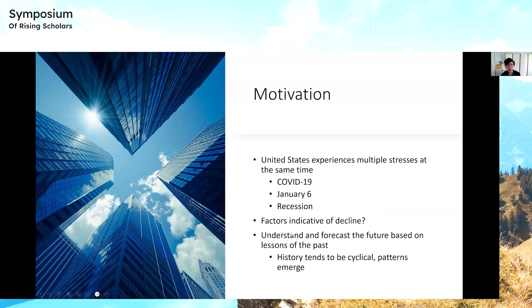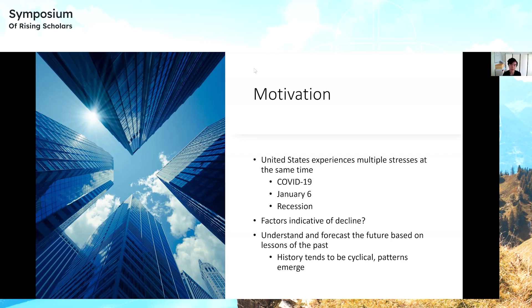I decided to investigate this question around towards the end of 2020. During that time, I began to notice, as someone living in the United States, a lot of stresses the country seemed to be experiencing — COVID-19 as a healthcare crisis, January 6 as a political crisis, a recession as an economic crisis. With all these crises, I wanted to investigate whether these factors are truly indicative of something more significant about the United States' trajectory as a country, or are they just hiccups in a general evolution towards progress?